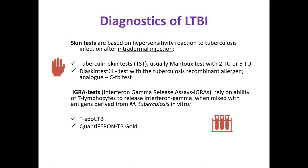All of them measure a person's immune reactivity to Mycobacterium tuberculosis. Skin tests are based on hypersensitivity reaction to tuberculosis infection after intradermal injection. The most famous tuberculin skin test is the Mantoux test with two or five tuberculin units. Another one is the DIA skin test with tuberculosis recombinant allergen, widespread across the territory of the Russian Federation and CIS countries.